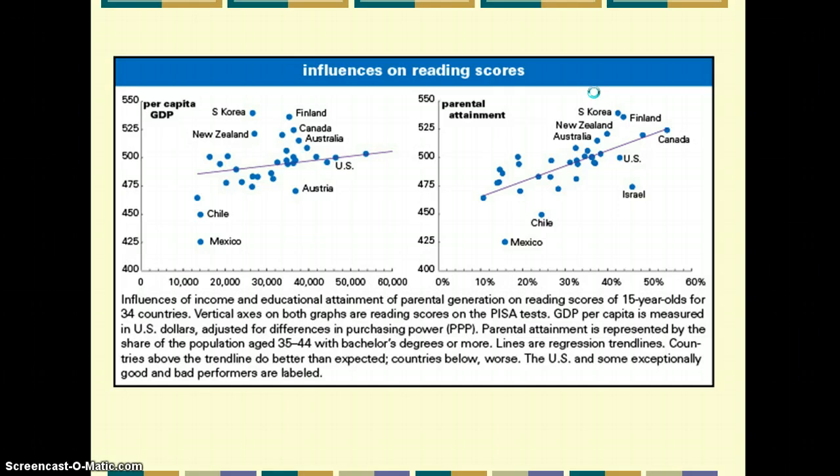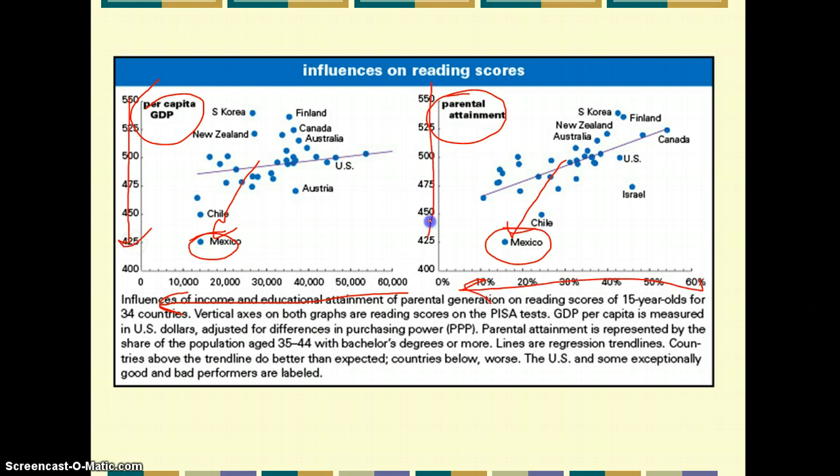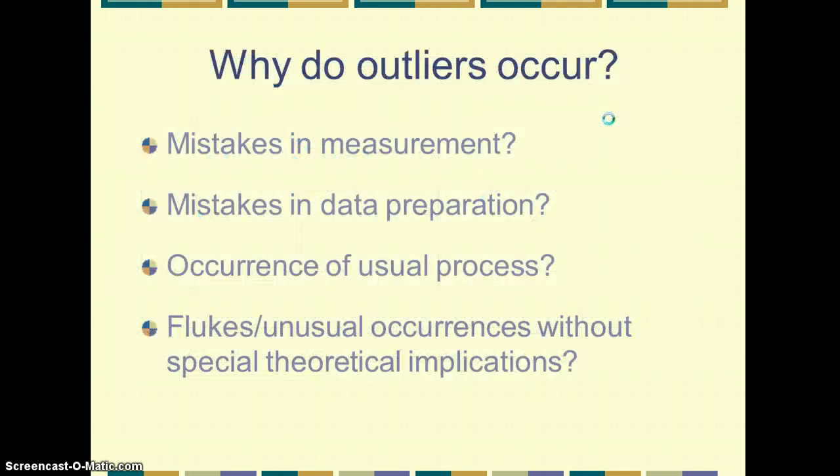If we were to look at some actual reported data, this is influences on reading scores for per capita GDP and parental attainment in some different countries. There seems to be a consistent outlier here. Can you guess which country that is? If you guessed Mexico, you were correct. Because Mexico sits down here at the bottom in both cases with it being very low on GDP per capita and very low on parental attainment and very low on reading scores. Whereas most of the countries are around this regression line.